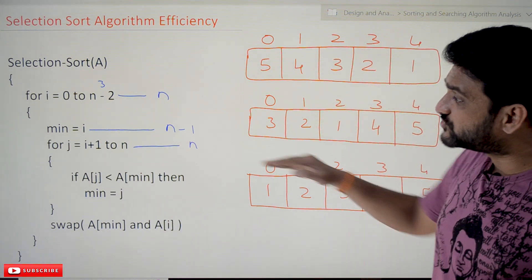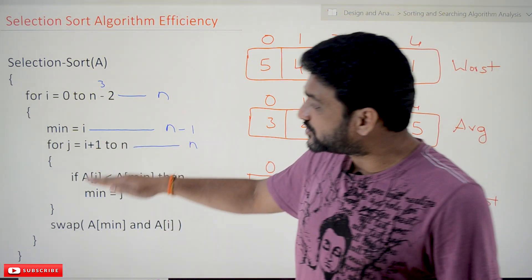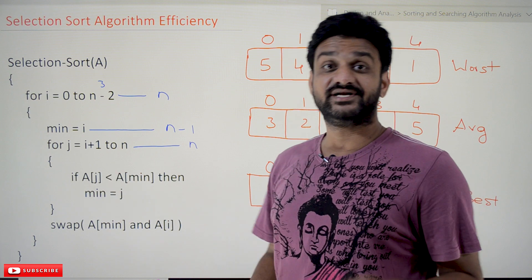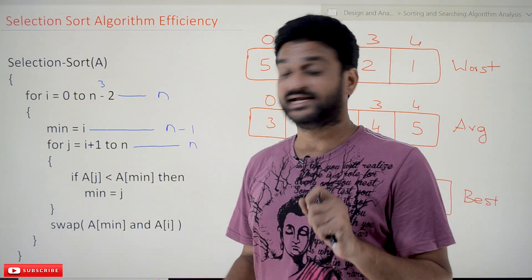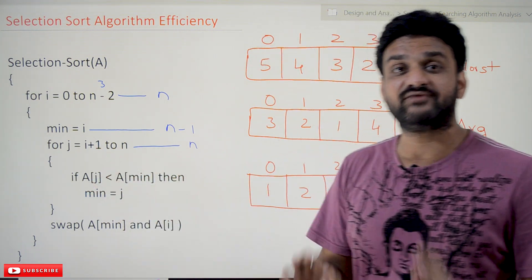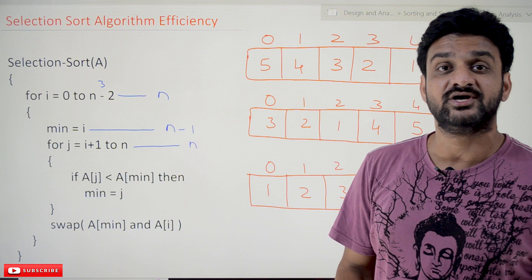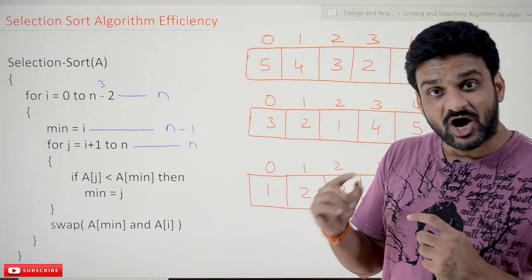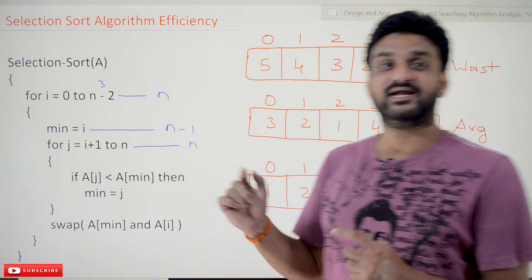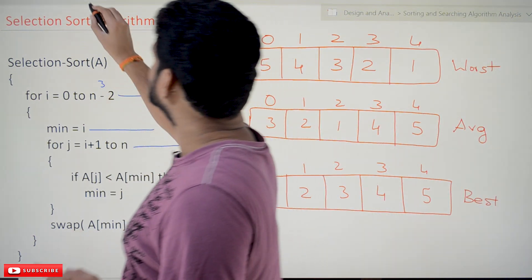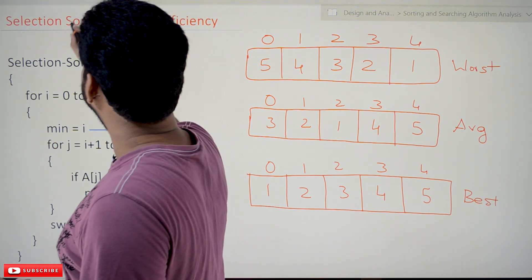We will analyze each and every case to understand how this inner for loop is going to behave — this part of the algorithm is very important for understanding how we analyze it. So let's analyze the worst case scenario.